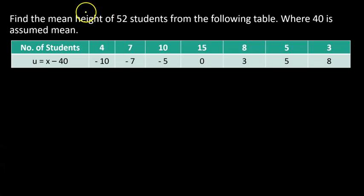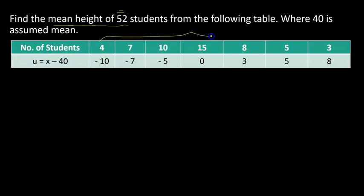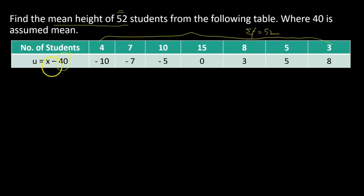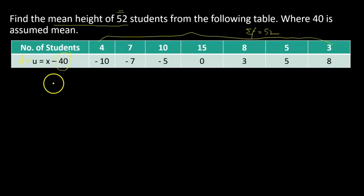Problem number one: find the mean out of 52 students. So my objective is to find the mean, and I already know that the total frequency sums to 52. It has been given from the following table that 40 is the assumed mean, and the deviation from the assumed mean is also given — generally represented by D, but here it is written as U. So I need to find the arithmetic mean. It's a pretty straightforward problem where half of the chart has already been done — the deviation has already been calculated.